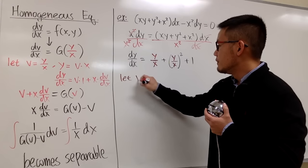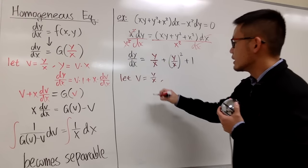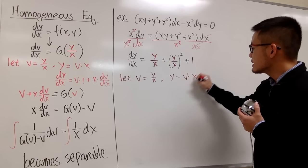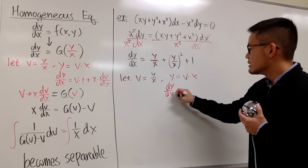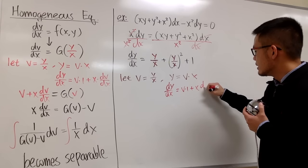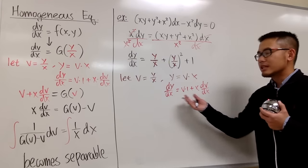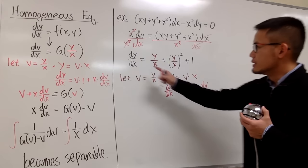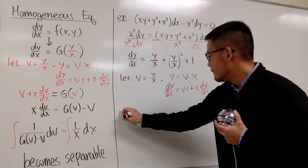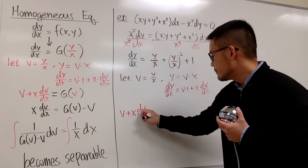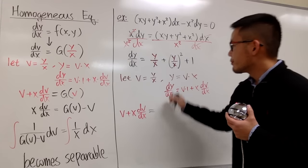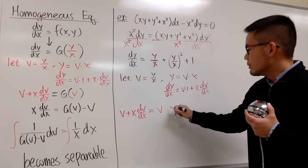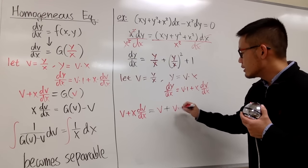We let v equal y/x, so y equals v times x, and dy/dx equals v times 1 plus x dv/dx. Replacing dy/dx on the left-hand side gives v plus x dv/dx. On the right-hand side, y/x becomes v, then plus v squared, and then plus 1. We notice the v on both sides cancel, leaving x dv/dx equals v² plus 1.